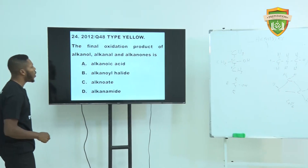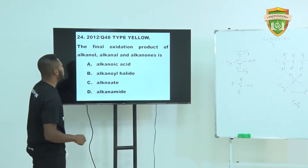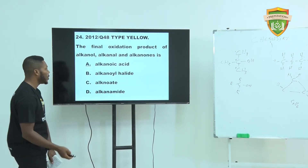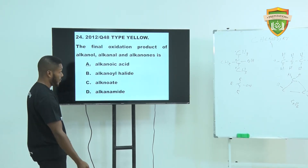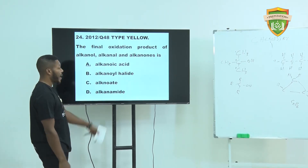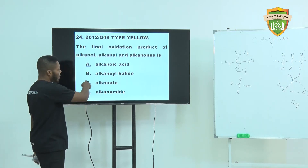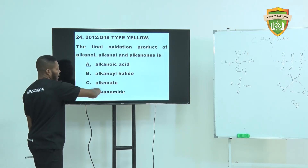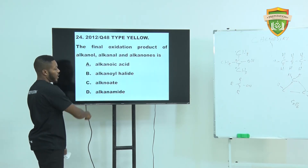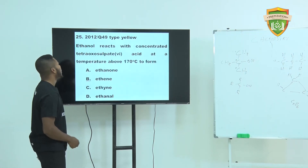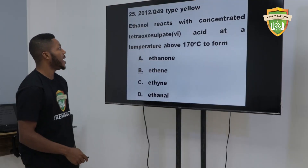The final oxidation product of alkanol, alkanal, and alkanone is alkanoic acid. Not alkanal, not alkanone, not alkylamide.